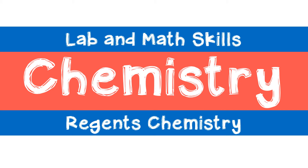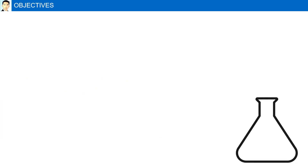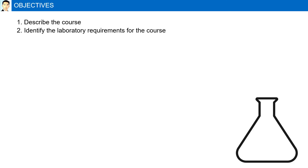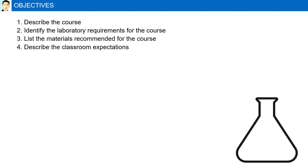Regions Chemistry. The objectives of this course are to describe the course, identify the laboratory requirements, list the materials recommended, describe the classroom expectations, and explain the grading policy.